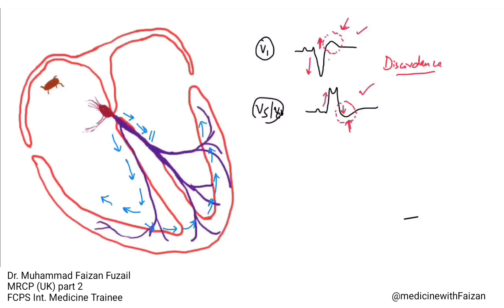The point to remember here is that these ST-T changes in the case of LBBB pattern are not a sign of myocardial ischemia. For example, the ST segment is elevated in V1 — should we call it MI? No, because this is due to discordance, and it's normal in bundle branch blocks, left ventricular hypertrophy, or in paced rhythm, such as when the patient has a pacemaker installed.